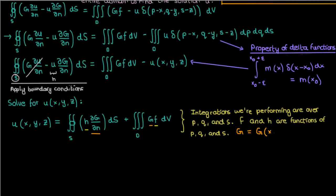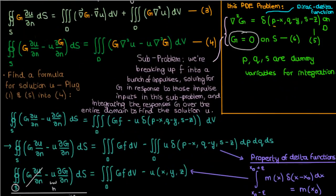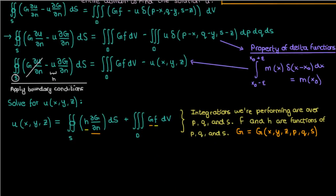Meanwhile, the Green's function capital G is in terms of p, q, s, x, y, and z, because the delta function in the Green's function PDE contains all six of those, so it stands to reason that the Green's function itself would still be dependent on all six of those variables.